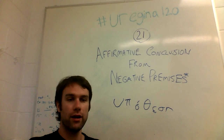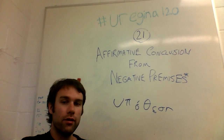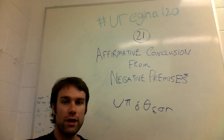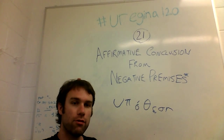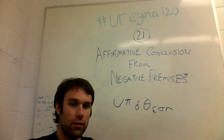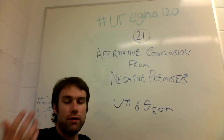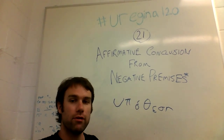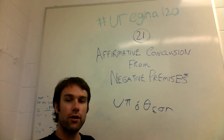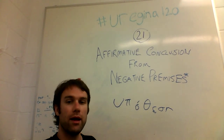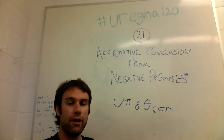Another thing worth pointing out before we get into examples: you may not encounter these arguments in a fully written-out form that's easy to see on a whiteboard with all the premises and the conclusion in front of you. Sometimes you'll get an argument where you get one premise and then a conclusion, but the second premise is implicit — it's assumed to be there, and everyone involved would admit it's there, but it's never actually written out. The first thing you should do if you encounter such an argument, or as a way to double-check, is to write out that second premise.